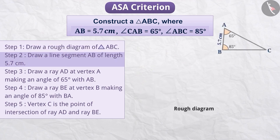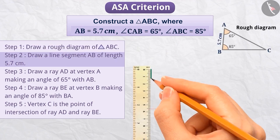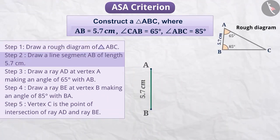Step 2. Next, with the help of a ruler, draw a line segment AB of length 5.7 cm.